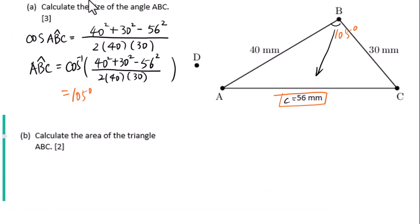Let's go to B. Calculate the area of the triangle ABC. We will use the area of the triangle equals one-half AB sin C. C is an included angle. 105 degrees is an included angle because we are given the length of AB is 40, length of BC is 30.